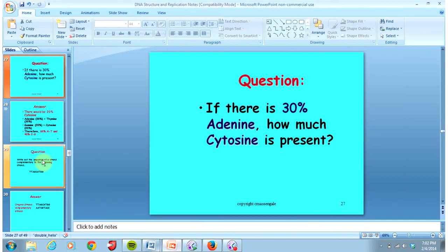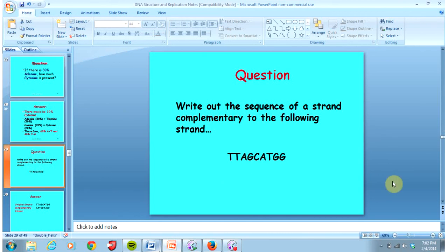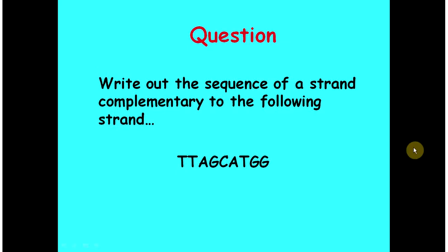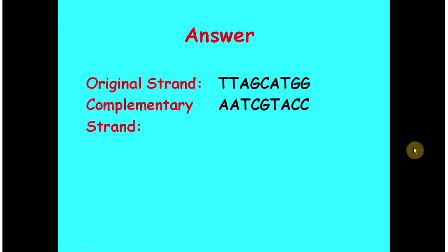Number 31 gives you a sequence of bases on one strand of DNA and asks you to fill in the complementary strand based on what you know about base pairing. If this is my original strand TTAGCATGG, I can fill in my complementary strand. Wherever there's a T I'm going to bond it with an A and vice versa. Wherever there's a G I'll bond it with a C and vice versa. So if you know the original strand it's very easy to determine the complementary strand on the other side of the DNA double helix.